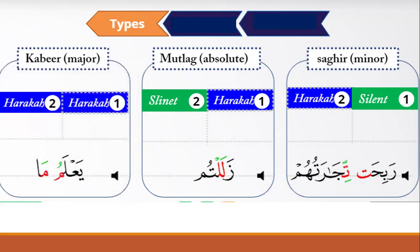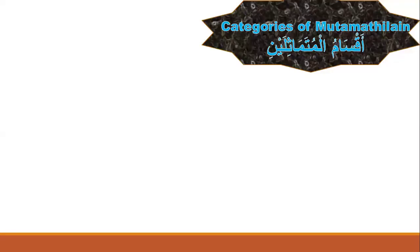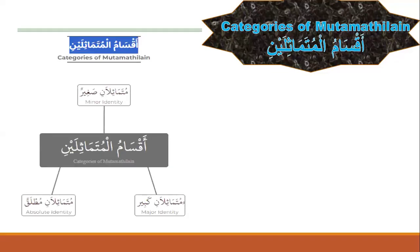كبير means the first letter has harakah and the second letter also has harakah, like يعلم ما. To summarize, the categories of mutamathilan are three: minor (صغير), major (كبير), and absolute (مطلق).